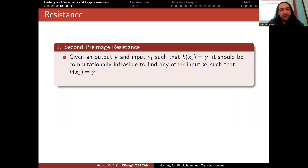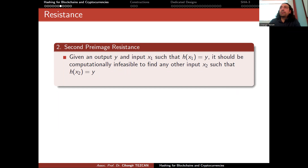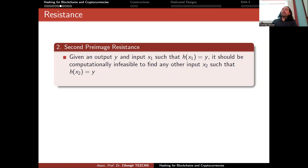Continuing with second preimage resistance: given an output y and input x1 such that h(x1) equals y, it should be computationally infeasible to find any other input x2 such that h(x2) also equals y. This happens because the output size is fixed, but the input size is not fixed. So the input space is really much larger than the output space, meaning many inputs will map to the same output. So collisions are inevitable.